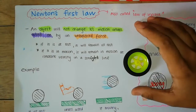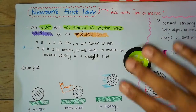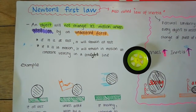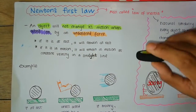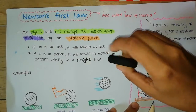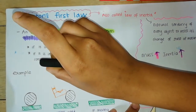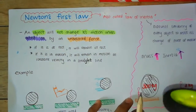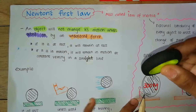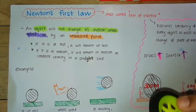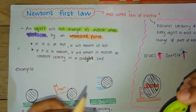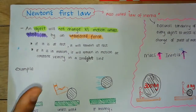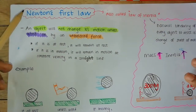So let's say we have this wheel and there are no forces acting on it — then it remains at rest. And if this wheel is already moving and we don't apply any force on it, it will continue to move at constant velocity in a straight line. That's simply Newton's first law.